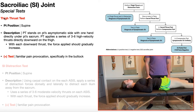The first special test is the thigh thrust test. This test is performed in supine, and the PT is going to stand on the patient's asymptomatic side. In this example, her left side is asymptomatic and her right side is painful or symptomatic — probable SI joint dysfunction on the right side.